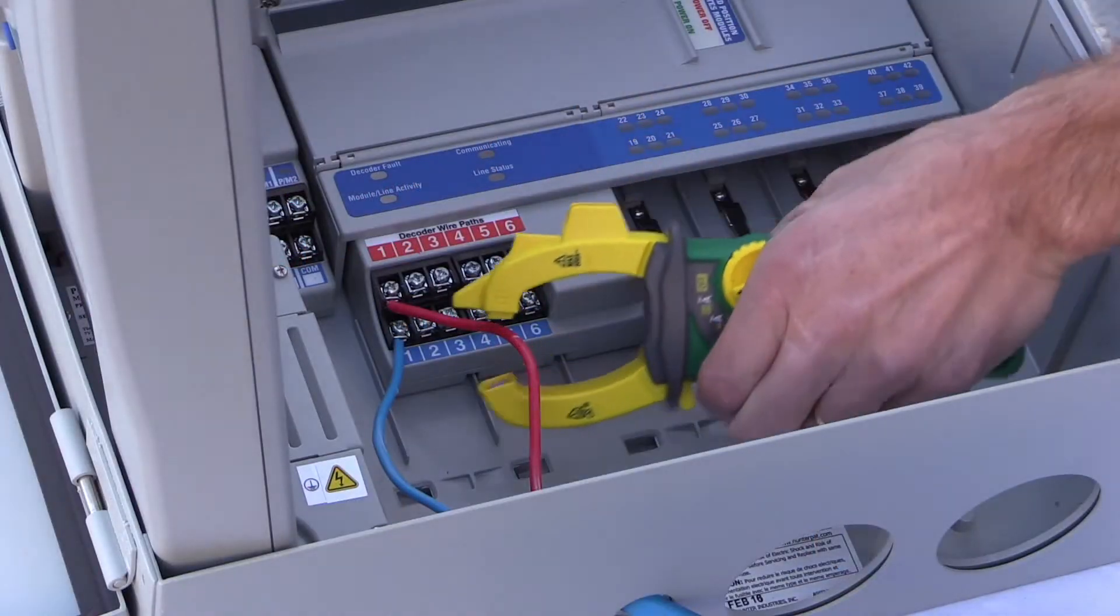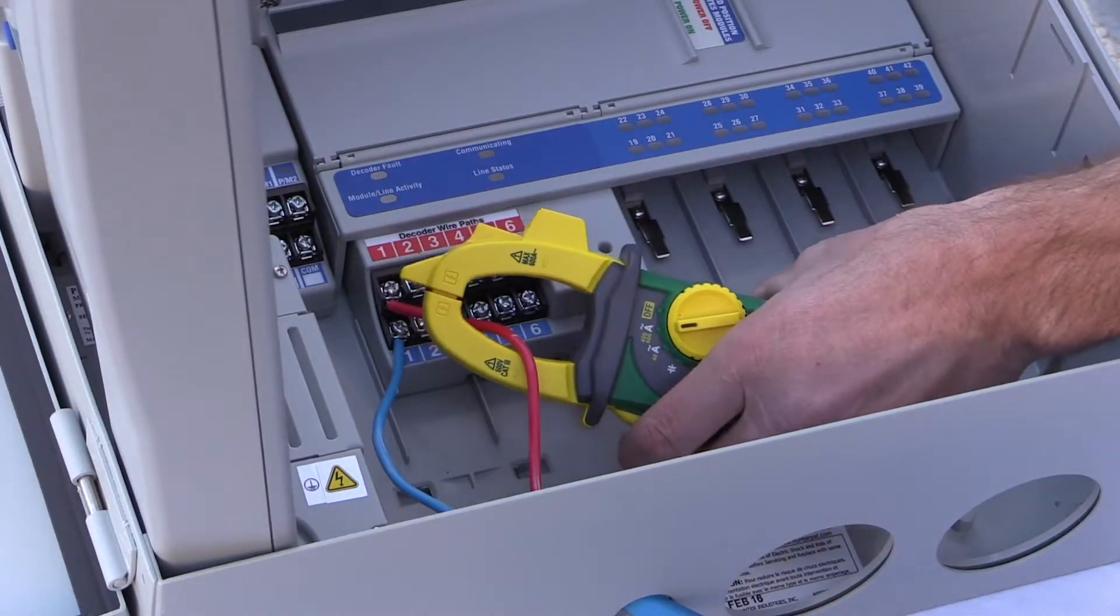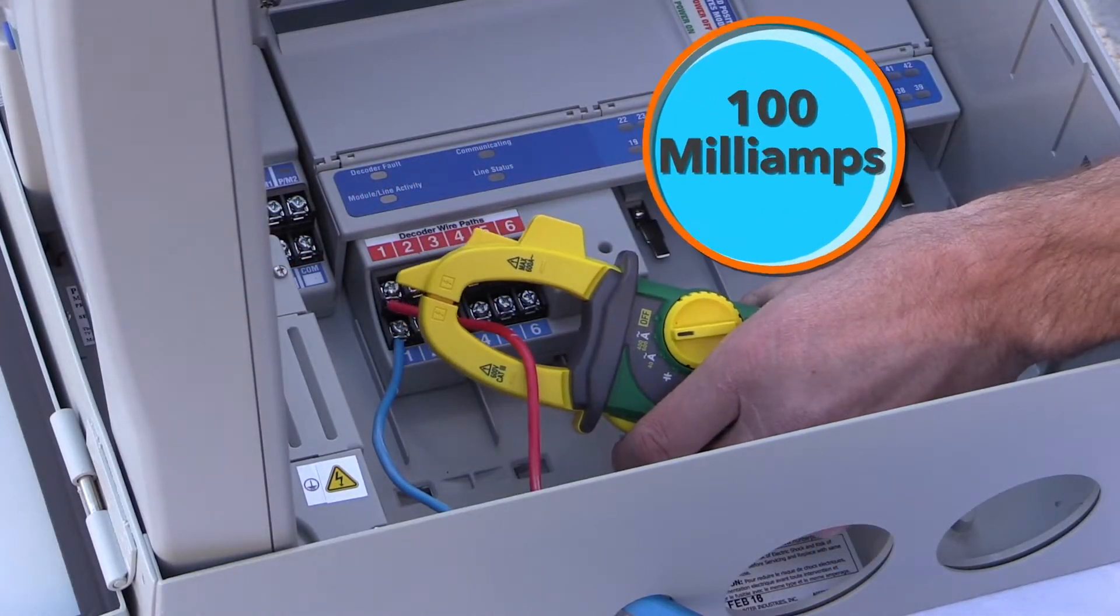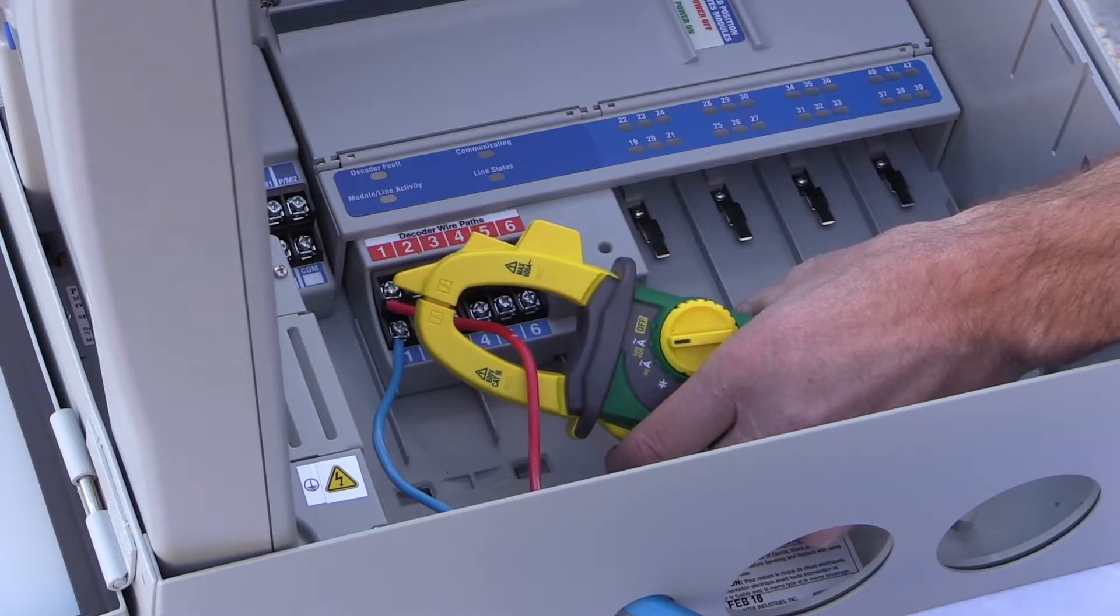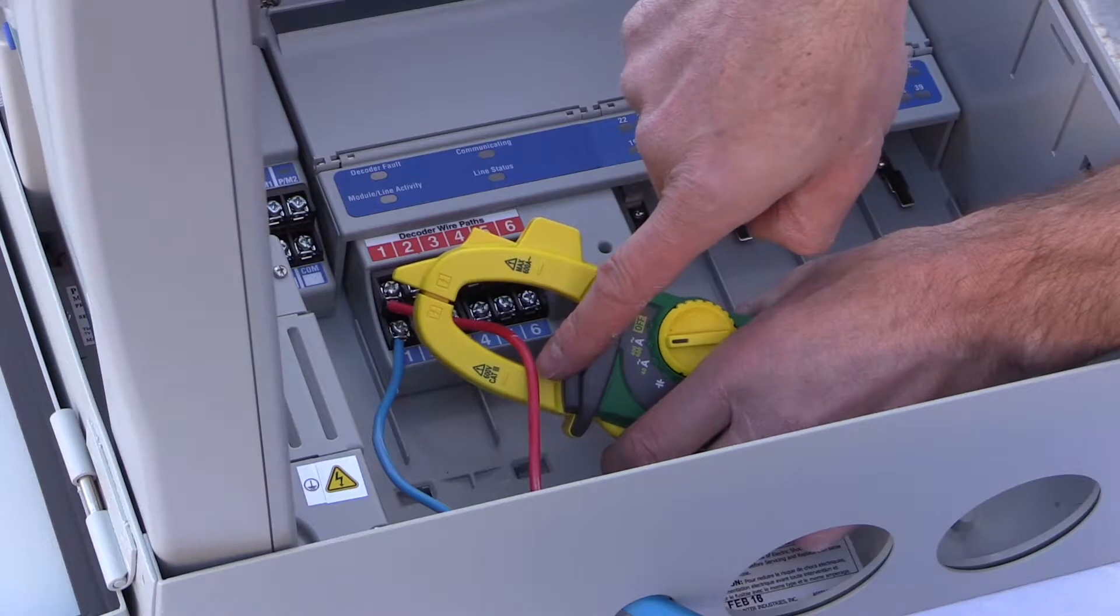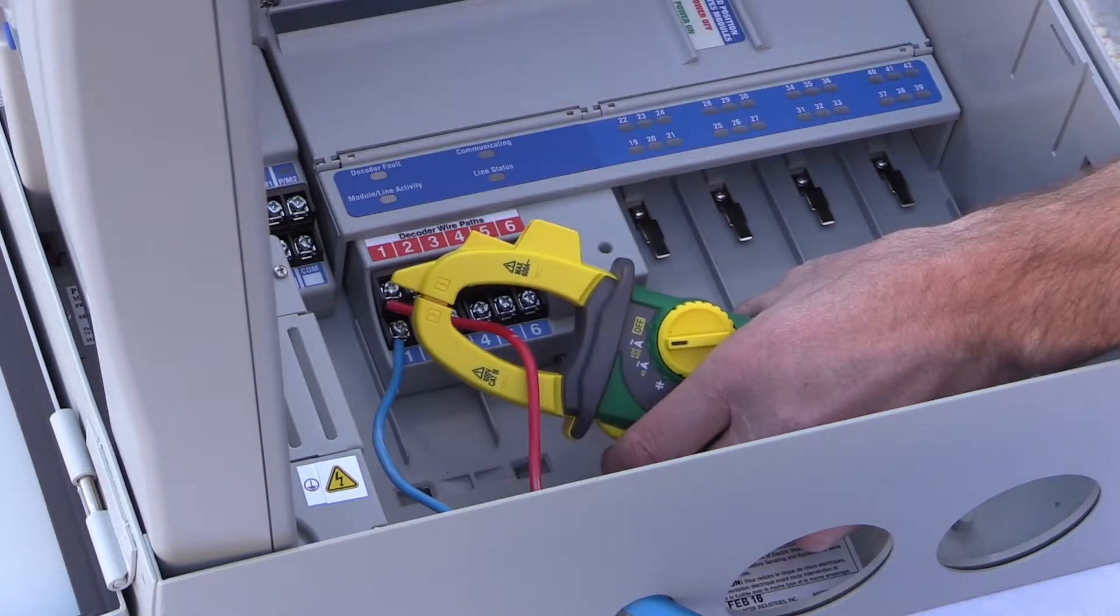If we clamp the meter around one wire at the start of the path, we should get a current flow reading of 100 mA with no solenoids activated. Be sure to place only one wire, the outbound wire, in the clamp to get an accurate reading.